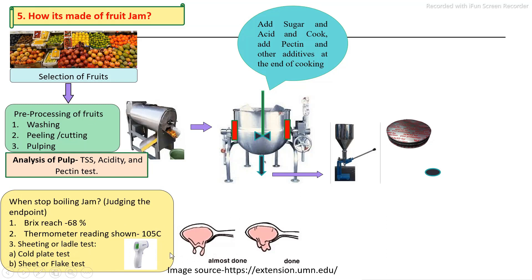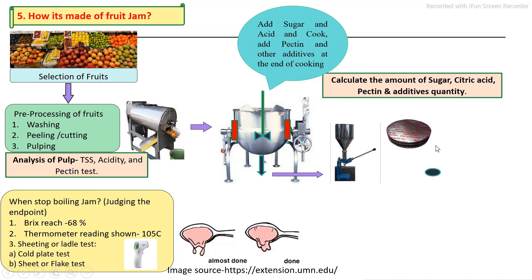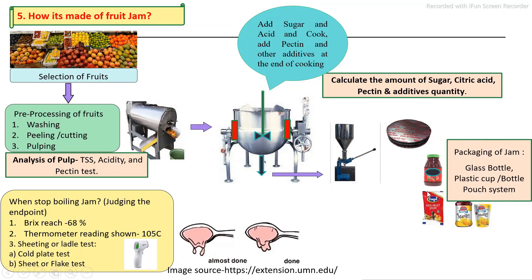You can see how to judge the end point by the brix method — the end point of the final product. After preparation of jam, it is hot-filled into glass bottles. For plastic bottles, it is slightly cooled and then filled. After filling, proper sealing is carried out. Then labeling and secondary packaging are done. These are the main steps involved in the jam production process.